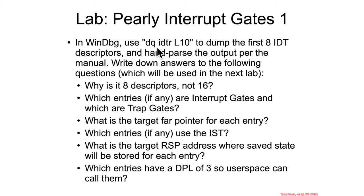Basically, I want you to use `dq idt r l10` or `hex 10` to dump out the first eight IDT descriptors. And I want you to hand-parse them according to the previous interrupt descriptor format that I've just shown, and then answer these questions.